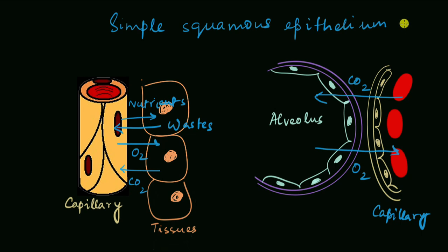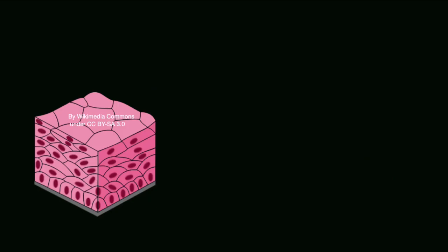There is another type of squamous epithelium which, as you can see, has many layers. This type of epithelium is called stratified squamous epithelium. Why stratified? Because the word strata means layers.